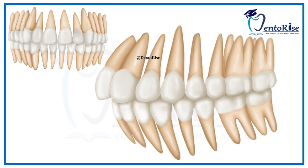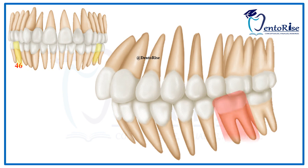If we talk about the permanent mandibular first molar, these are the sixth teeth from the midline in the mandible on the right and the left side. According to the FDI tooth notation system, the permanent right mandibular first molar is numbered as 46, and the permanent left mandibular first molar is numbered as 36.